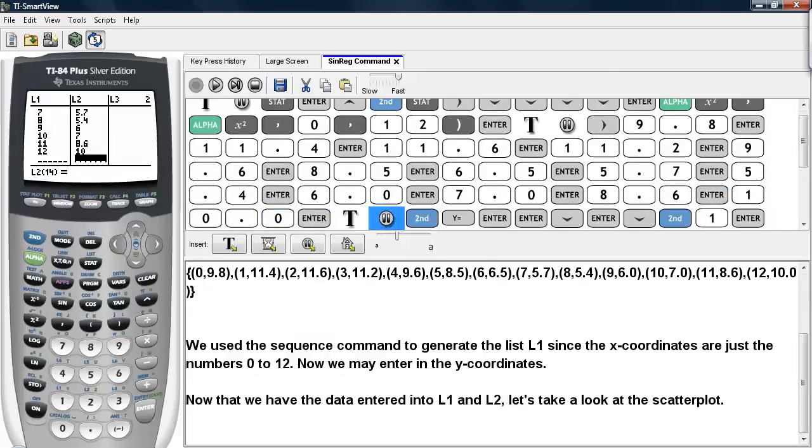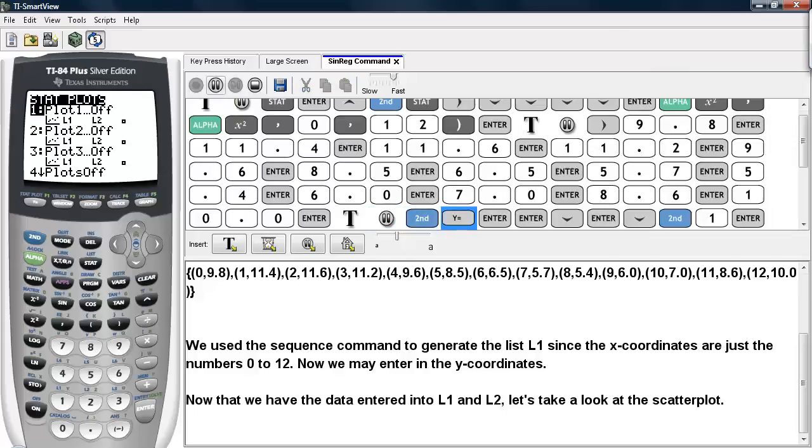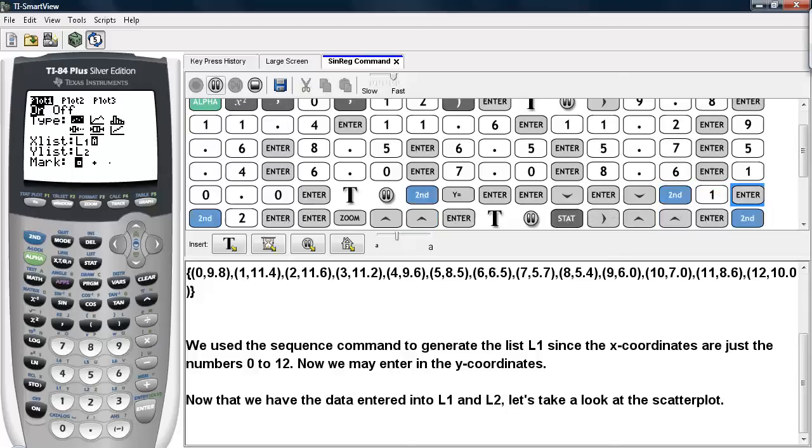Now that we have entered in our data lists, we can take a look at the scatter plot. We'll do that by hitting second, and then y equals. We'll turn the first plot on. We'll select the scatter plot option. That's the very first one under type. We'll use L1 as the x-list, and then L2 as the y-list. And we'll use the square as the mark, so it's pretty easy to see.